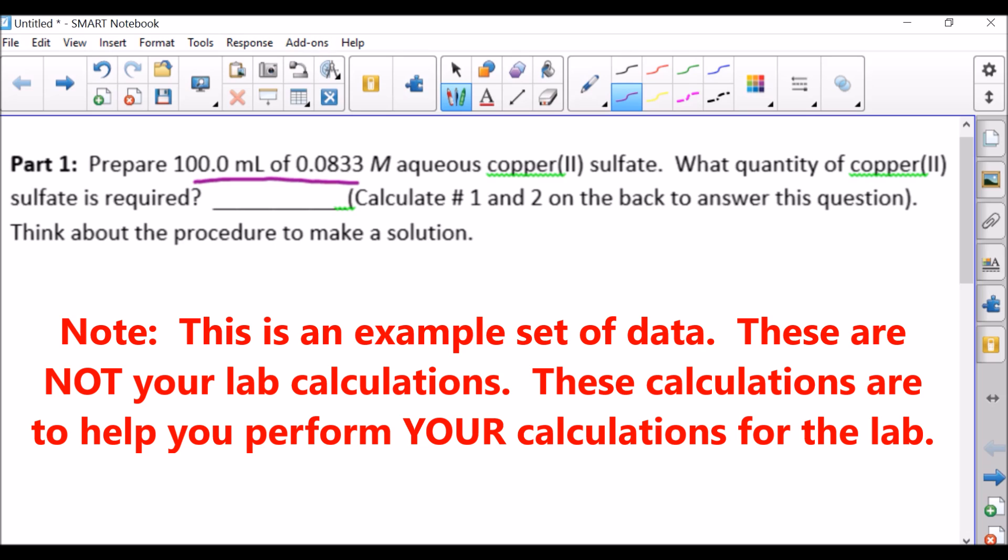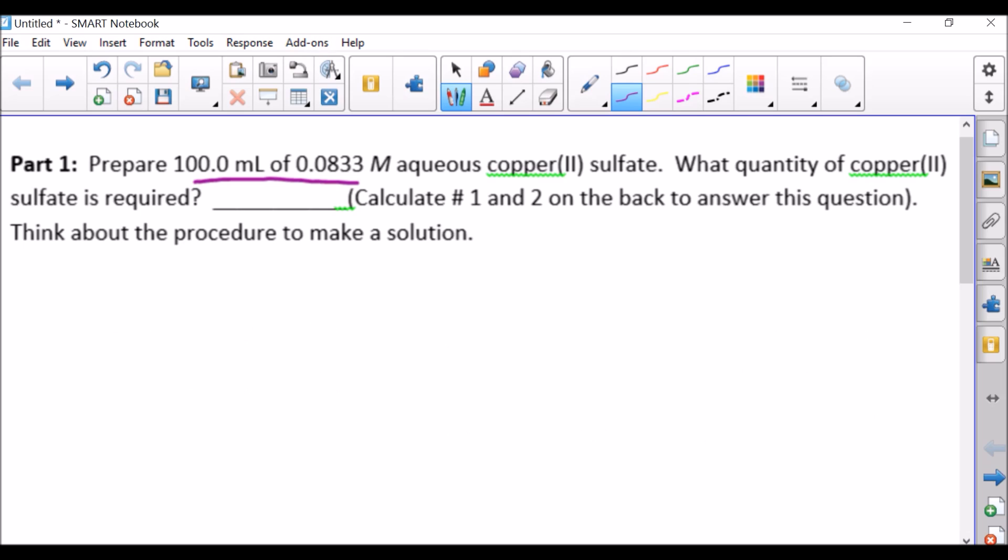So we need to do the calculations. Now again, you're using a different substance, I'm just showing this as an example. Anytime that you know your volume and your molarity, always start with your volume. So in this case we have 100 milliliters.